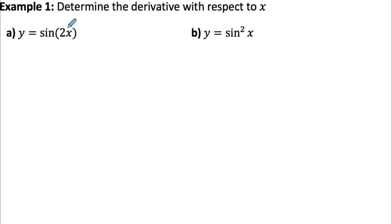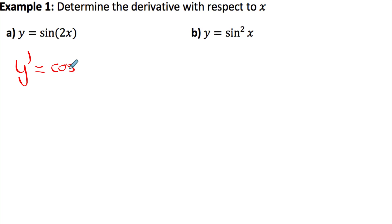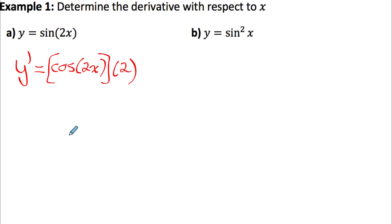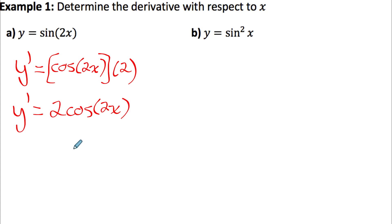For example, to find the derivative of sine of 2x, the argument is a function of x, so we need chain rule. The derivative of the outside function sine is cosine, so we do cosine of 2x, leaving the inside exactly as it is. Then multiply by the derivative of the inside function: the derivative of 2x is 2. So the answer is 2 cosine of 2x.